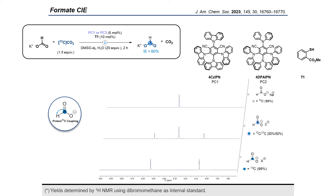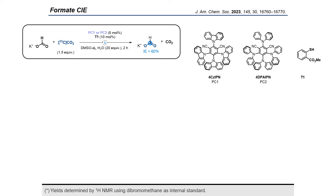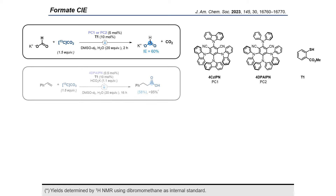This is quite characteristic in proton NMR, with the appearance of a triplet around 8.3 ppm. Indeed, your carbon-13 is coupling with the proton, so you can do the isotopic enrichment analysis directly in proton NMR.